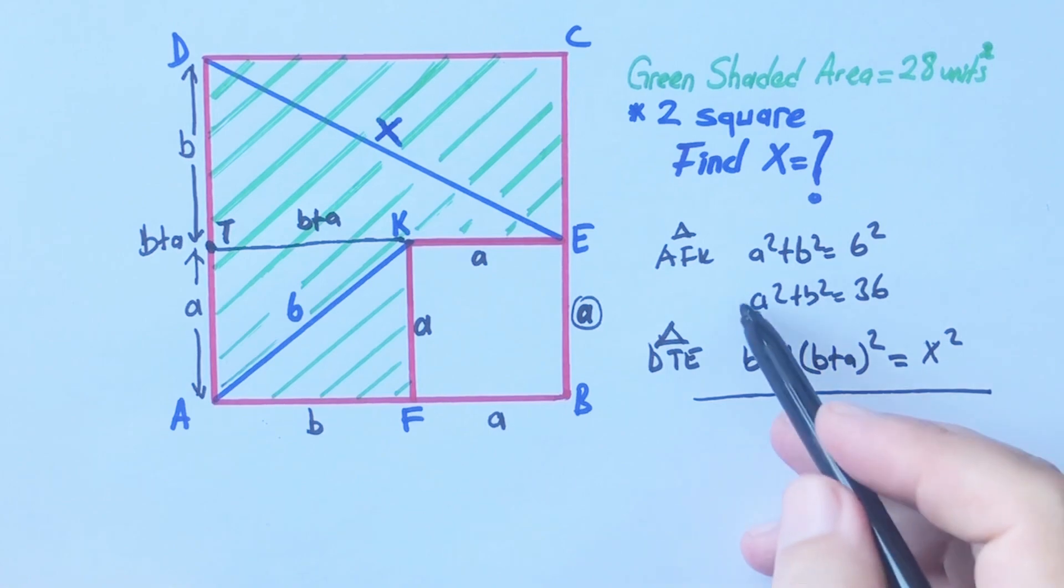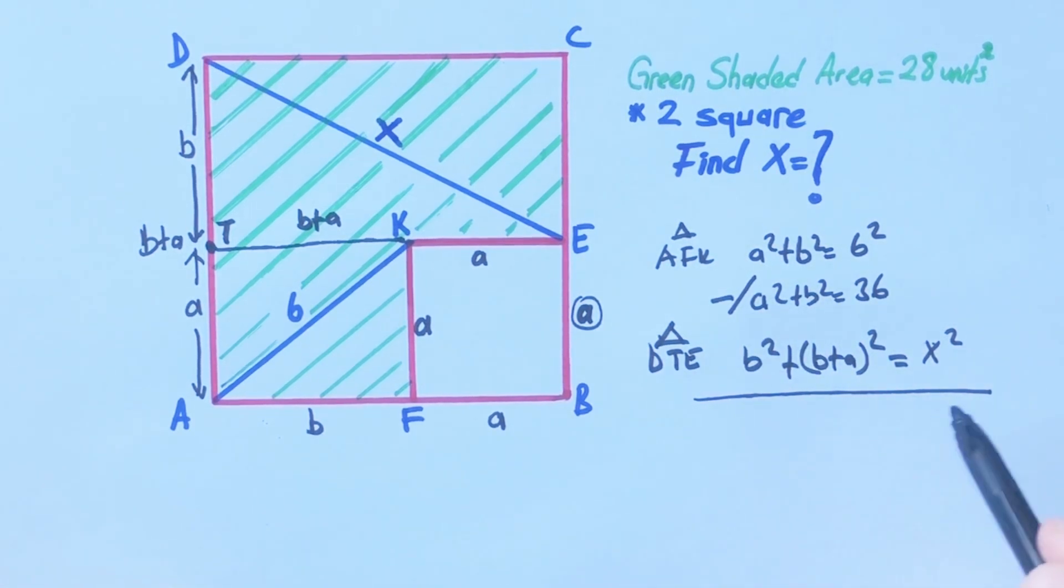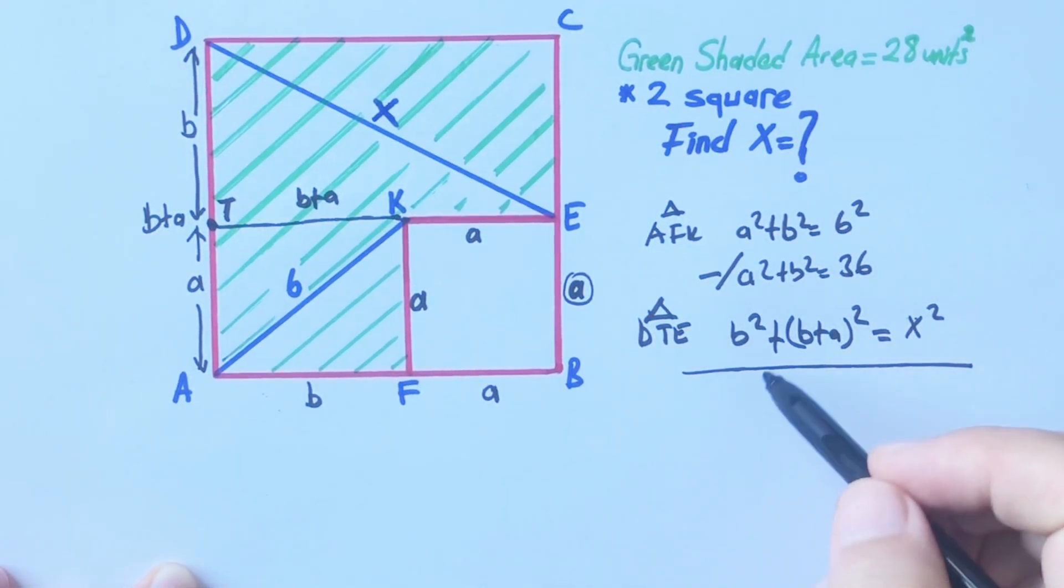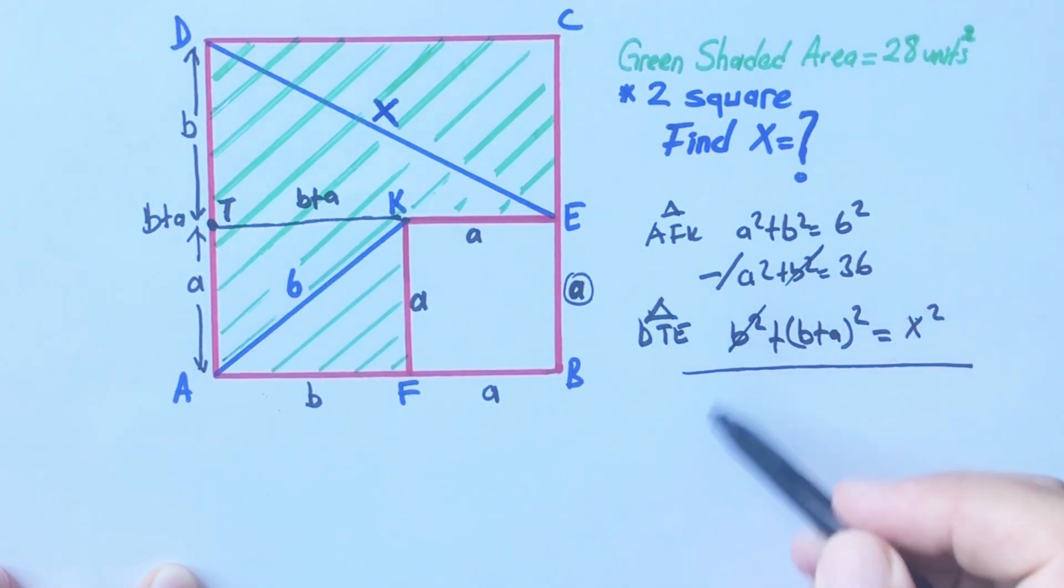Therefore, if we subtract the first equation from the other, these are gone. So b plus a whole squared minus a squared equals x squared minus 36.